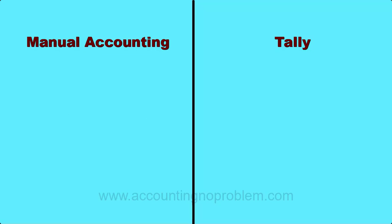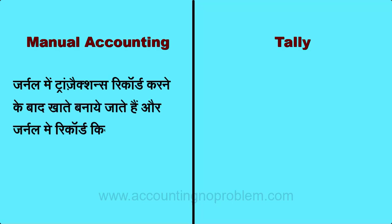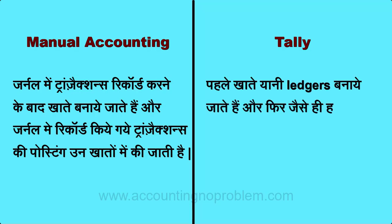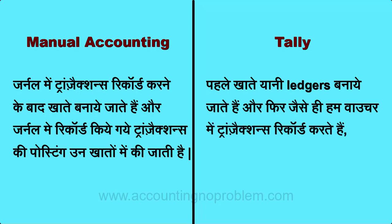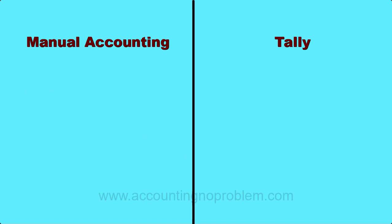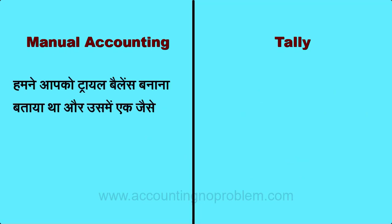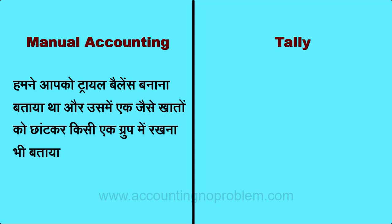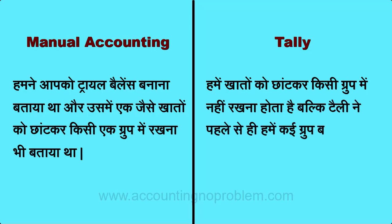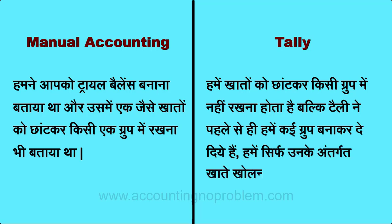Manual accounting की process में हमने ये भी देखा था कि journal में transactions record करने के बाद खाते बनाये जाते हैं और journal में record किये गए transactions की posting उन खातों में की जाती है। किन्तु Tally में ऐसा नहीं होता - इसमें पहले खाते यानि ledgers बनाये जाते हैं और फिर जैसे ही हम voucher में transactions record करते हैं, संबंधित ledger में उसकी posting अपने आप हो जाती है। Tally ने पहले से ही हमें कई groups बना कर दे दिये हैं, हमें सिर्फ उनके अंतर्गत खाते खोलने होते हैं।